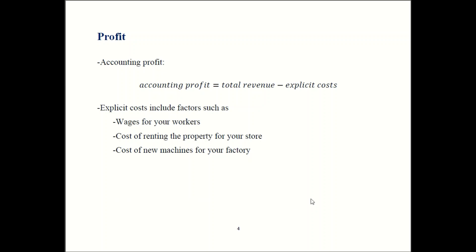Accounting profit is total revenue minus all the explicit costs. There are many examples of what explicit costs might be: you have to pay your workers; if you rent your storefront, you pay rent to the landlord; your factory requires equipment to make stuff, so that equipment costs money; it also takes energy to keep the lights on and the machines running, so your energy bill is also an explicit cost — and there are countless others.